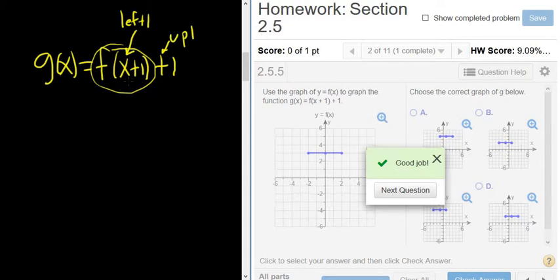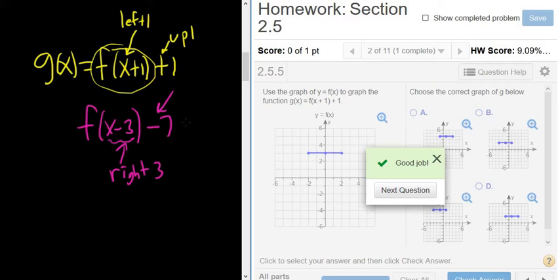So again, whenever you add to the x, it's backwards. So for example, if it had been f of x minus 3 minus 7, well, when you subtract from the 3, it's backwards, so it's right 3. And then when you subtract from the entire function value, it's down, so down 7.